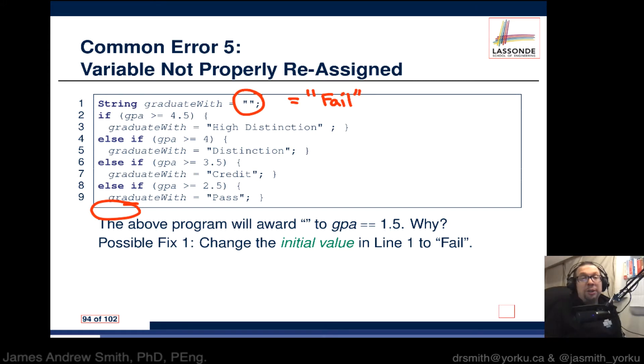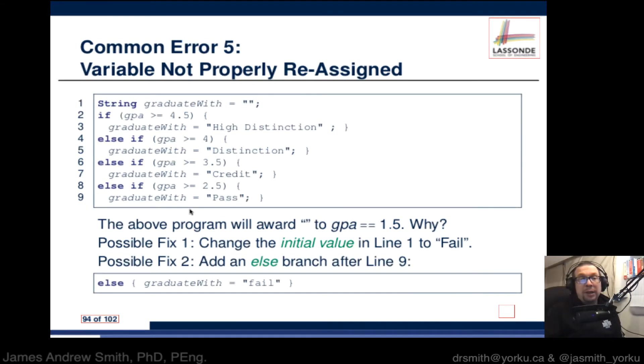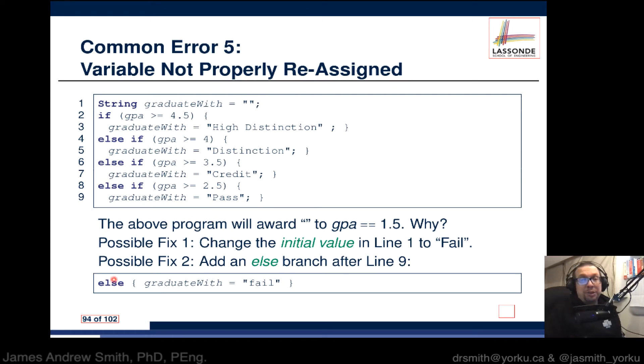The second option is you can add an else clause at the end that says graduateWith equals fail. In the event that the student had a 1.4 or something like that, then you would say that they graduated with a fail. That would be your default. Either of those would be good ways to fix this problem.